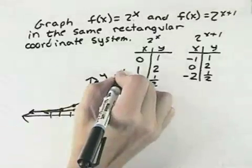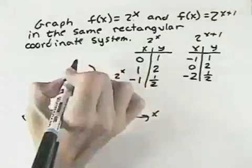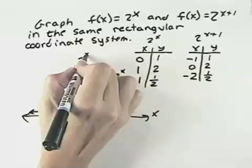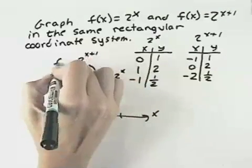So here we have the graph of 2 to the x, and the one that's shifted 1 over from that is 2 to the x plus 1.